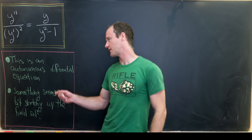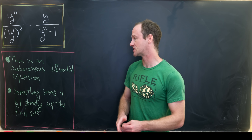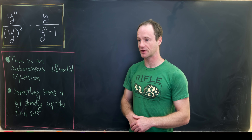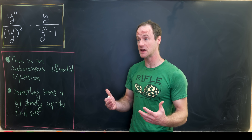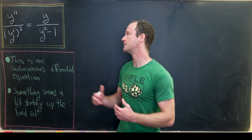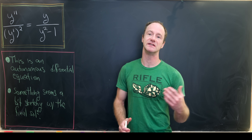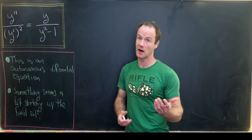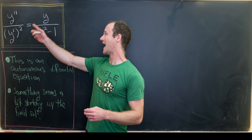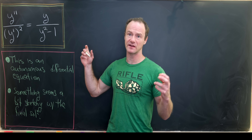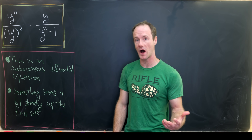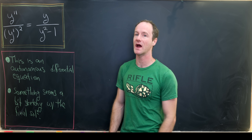I'd like to point out that this is an example of an autonomous differential equation. An autonomous differential equation is one where you only see the dependent variable and you do not see the independent variable. So if the dependent variable is y and the independent variable is x, notice there are no free x's in this equation — they're all wrapped up within y, y prime, or y double prime.